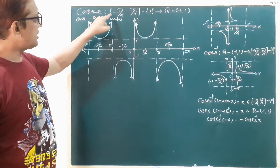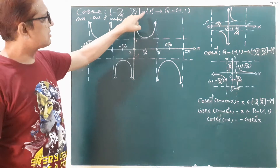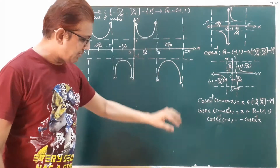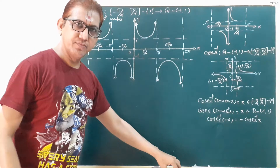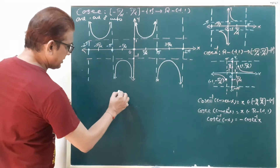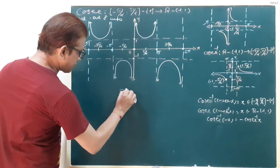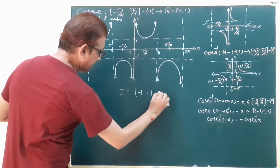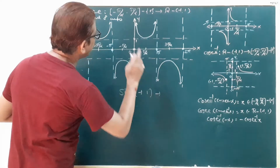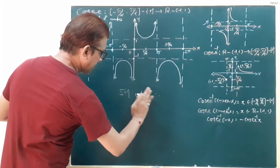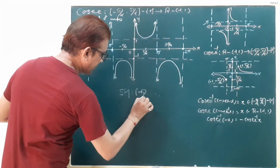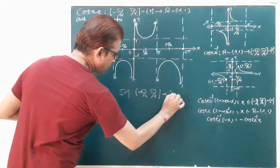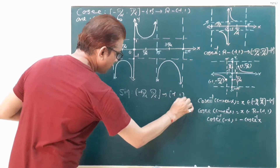The cosecant function maps the closed interval minus pi by 2 to pi by 2, minus 0, to ℝ minus the open interval minus 1 to 1. First, let us remember the sine function: the sine function has range minus 1 to 1, with domain minus pi by 2 to pi by 2 mapping to minus 1 to 1.